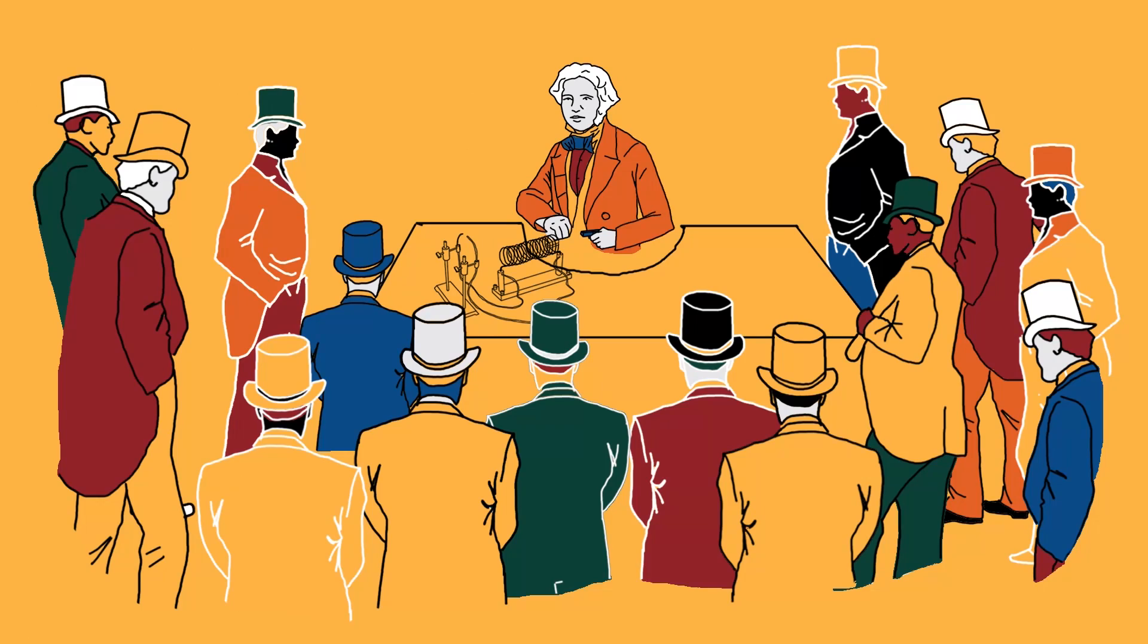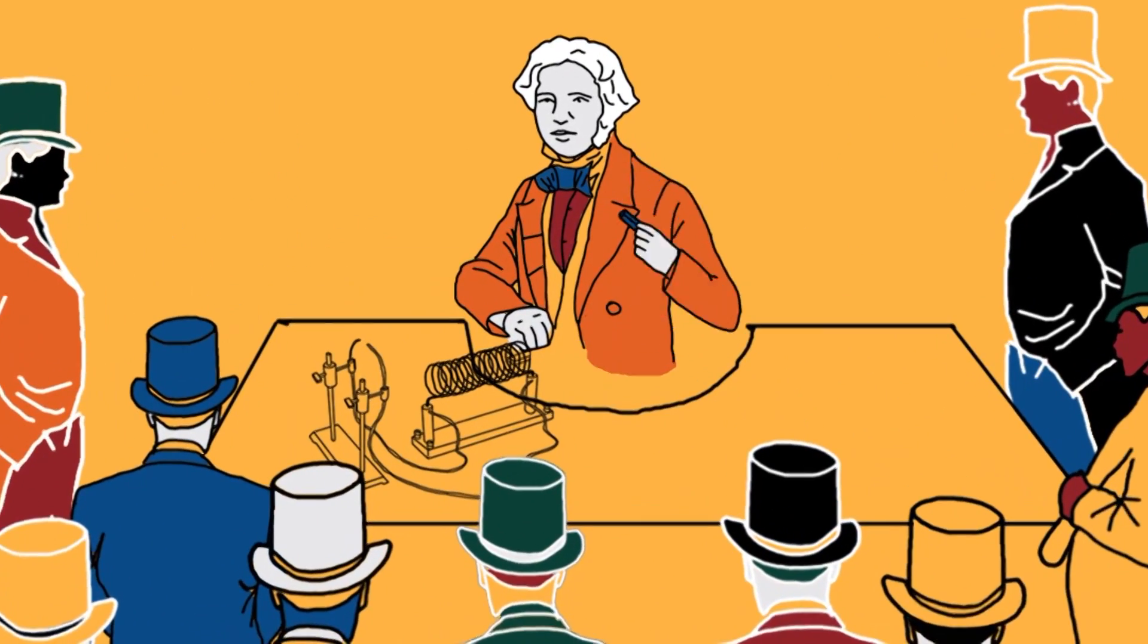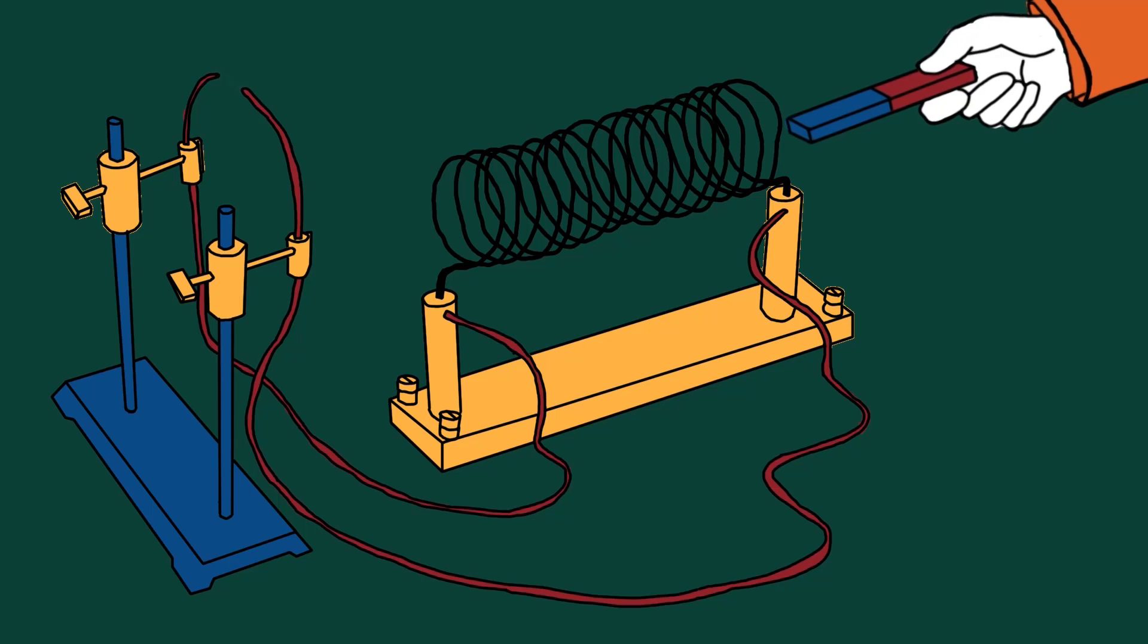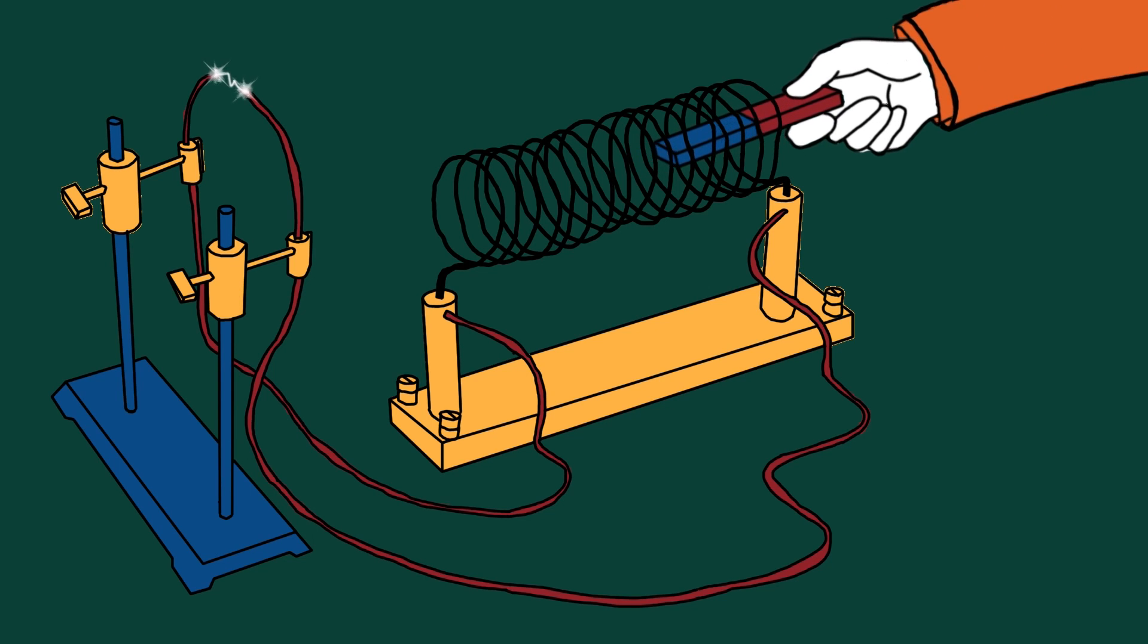In 1831, Michael Faraday showed that a magnet could generate electricity within a coil of wire. This amazing experiment turned motion and magnets into electrical power.